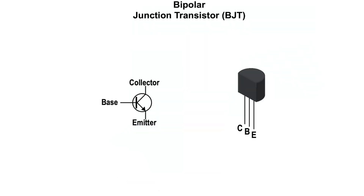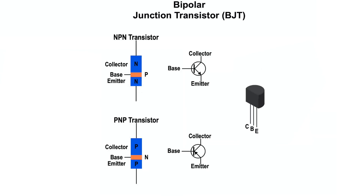A Bipolar Junction Transistor consists of three semiconductor materials: an emitter, a base, and a collector. There are two major types of bipolar transistors, NPN and PNP. The difference between an NPN and PNP transistor is the biasing of operation. The current directions and voltage polarities for each kind of transistor are exactly opposite each other.